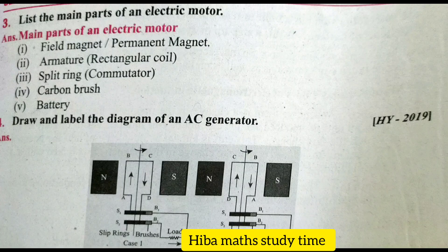Third question: List the main parts of an electric motor. The main parts of an electric motor are: field magnet, permanent magnet, armature, rectangular coil, split rings, commutator, carbon brush, and battery.